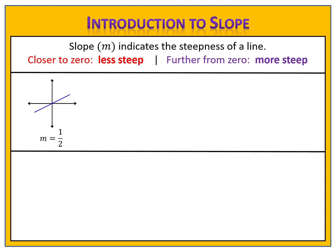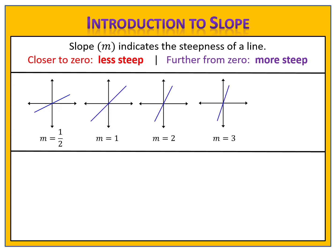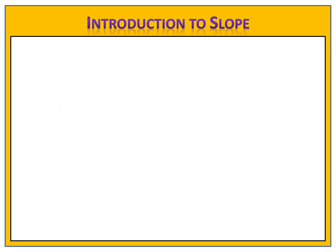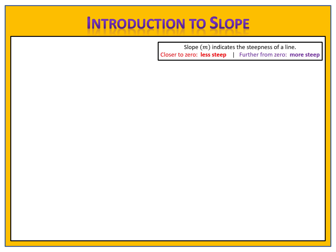Take a look at these examples. We start with a slope of one half. Watch as the slope gets further from zero — notice what happens to the line: it gets increasingly steep. The same is true when we have negative slopes. Here we have a slope of negative one half. Watch what happens as the slope gets further and further away from zero — the steepness increases. Remember, the further the number is from zero, the steeper the line will be.